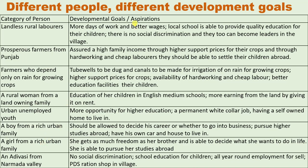Some examples are given as per your textbook. The first example is a landless rural laborer. Their developmental goals and aspirations include more days of work and better wages, or regular work. They also want a local school that can provide quality education for their children, no social discrimination, and the opportunity to become a leader in the village.